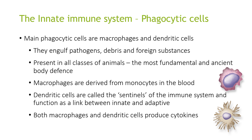Moving on to the phagocytic cells, these are mainly macrophages and dendritic cells. They engulf pathogens, debris and foreign substances. They are present in all classes of animals as the most fundamental and ancient body defence. Macrophages are derived from monocytes in the blood. Dendritic cells are called the sentinels of the immune system and function as a link between the innate and adaptive immune systems. Both macrophages and dendritic cells produce cytokines.